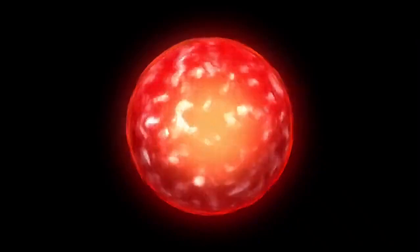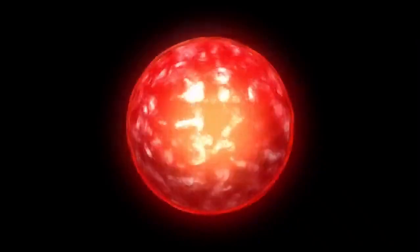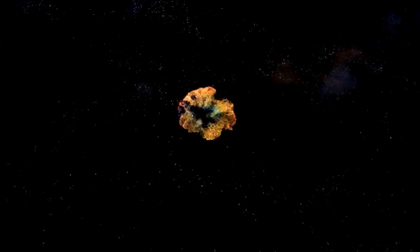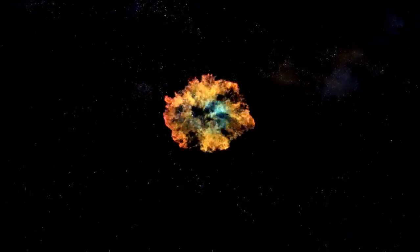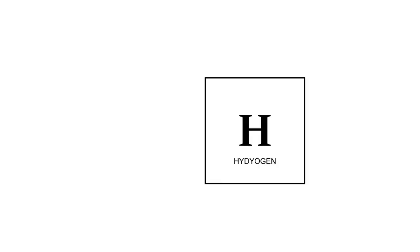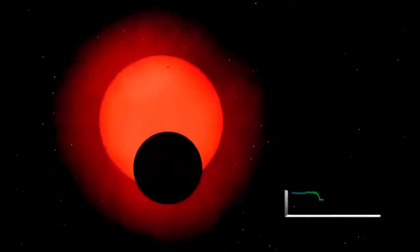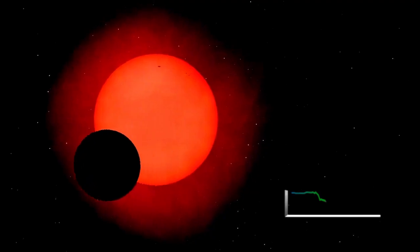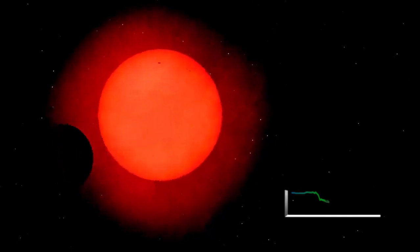In the case of Betelgeuse, a red supergiant nearing the end of its life cycle, this balance has become increasingly unstable. As the star depletes its core hydrogen fuel, the nuclear fusion processes that sustain it undergo significant changes. When hydrogen fusion slows in the core, radiation pressure decreases, causing the gravitational pull to momentarily gain the upper hand. This results in the contraction of the star's outer layers.